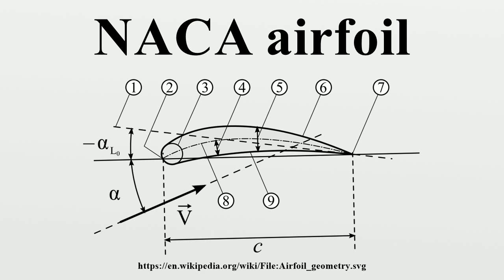Cambered four-digit NACA airfoil: The simplest asymmetric foils are the NACA four-digit series foils, which use the same formula as that used to generate the 00XX symmetric foils, but with the line of mean camber bent. The formula used to calculate the mean camber line uses the following variables: M is the maximum camber, P is the location of maximum camber. For this cambered airfoil, the thickness needs to be applied perpendicular to the camber line.